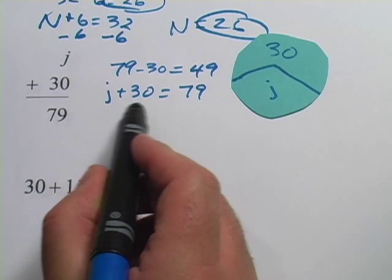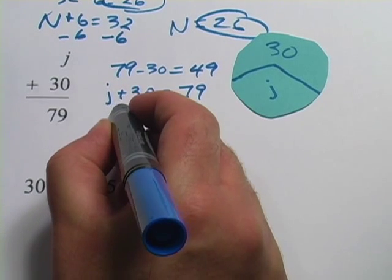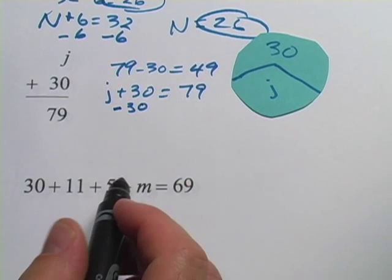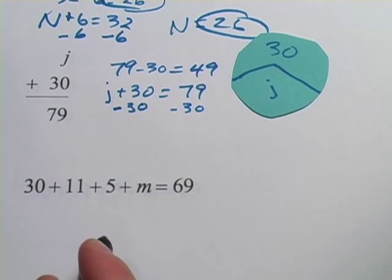So we have to undo whatever else is happening over here. We have a plus 30, to undo it, we'll do the opposite, which is a minus 30. But the rules of algebra say do that to both sides. So minus 30 to that side.